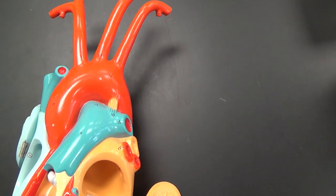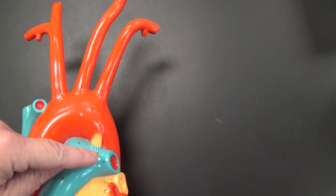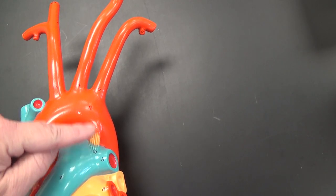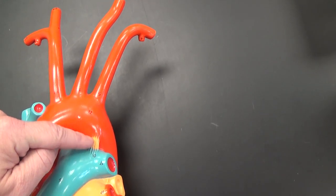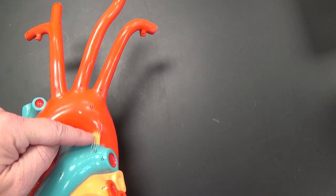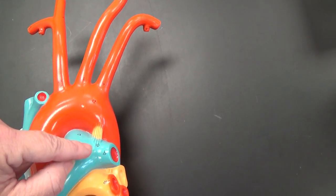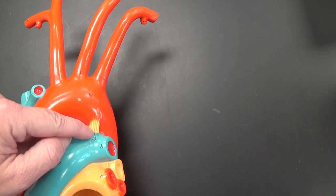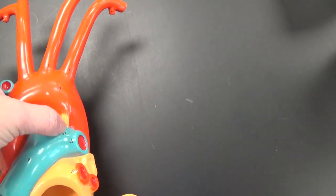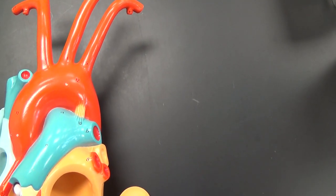Another remnant we have from developmental stages is this connection point between the pulmonary trunk and the aorta. When we are in the uterus this is actually a blood vessel that allows blood exchange between these two vessels. However, after we are out we no longer need that and this becomes a remnant. It's got just kind of a corrugated structure here to it. This is called the ligamentum arteriosum.